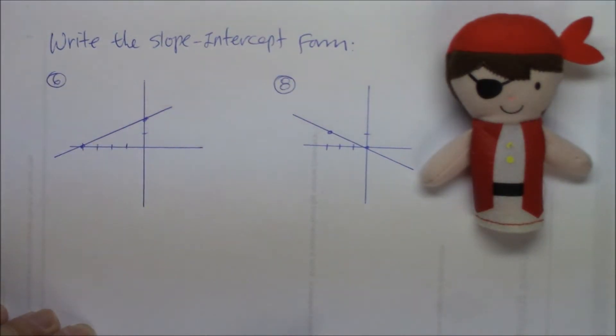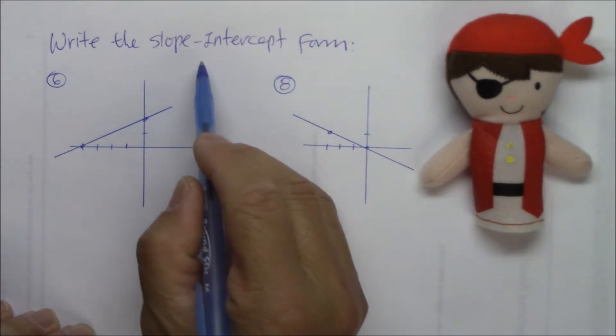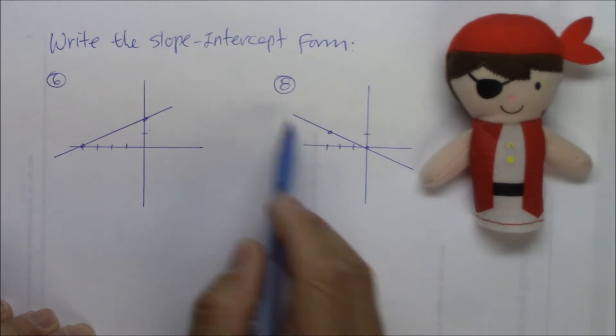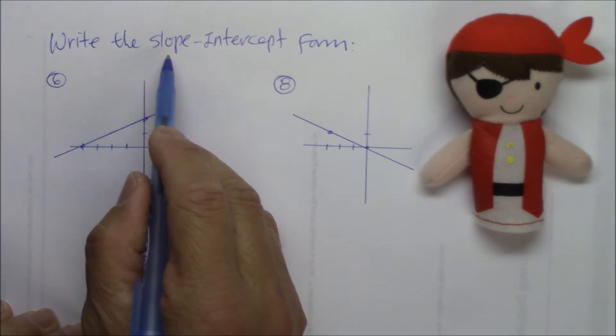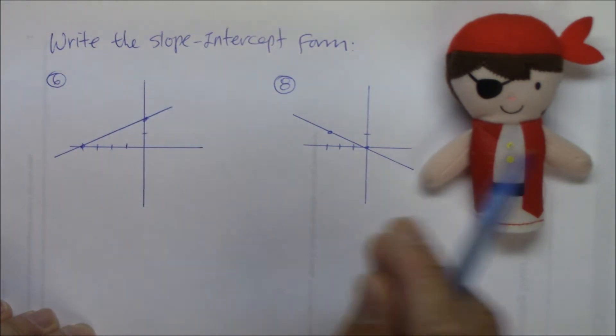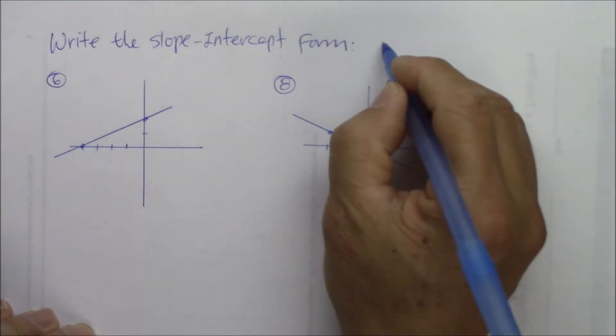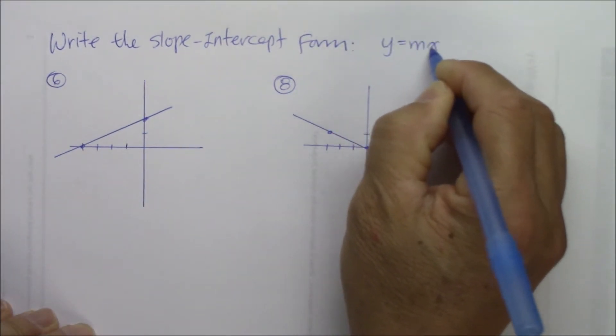Hi, this instructional video is about writing slope-intercept form when you're given a graph. Writing the slope-intercept form when you're given the graph. And as you know, the slope-intercept form is written as y is equal to mx plus b.